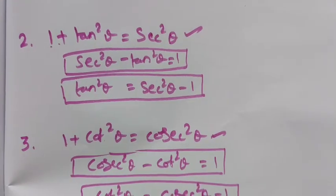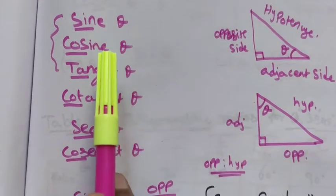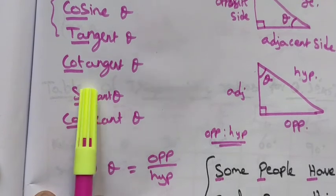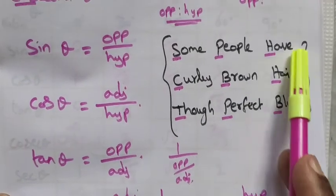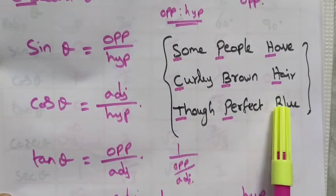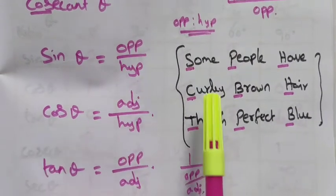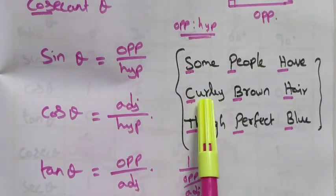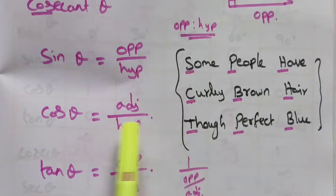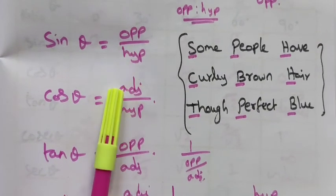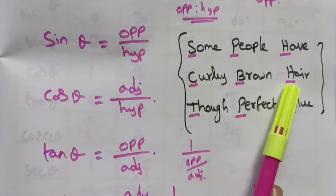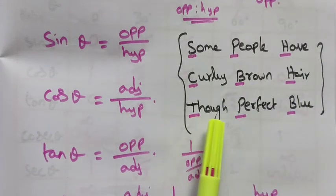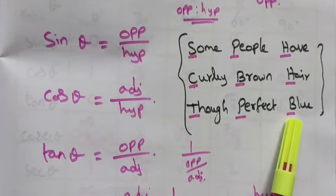Just recall what we learned in the first two videos. The ratios are sin, cos, tan, cot, secant, and cosecant. Using the mnemonic 'some people have curly brown hair, though perfectly black,' we can recall the ratios. Sin ratio is opposite divided by hypotenuse, cos ratio is adjacent divided by hypotenuse, and tan ratio is opposite divided by adjacent side.